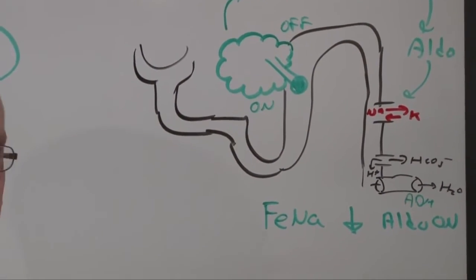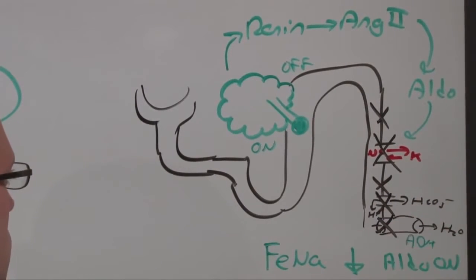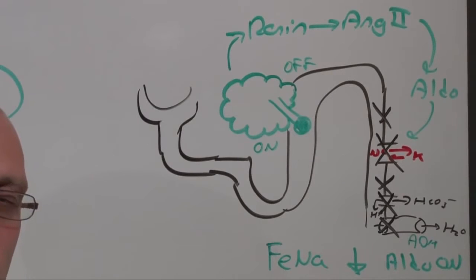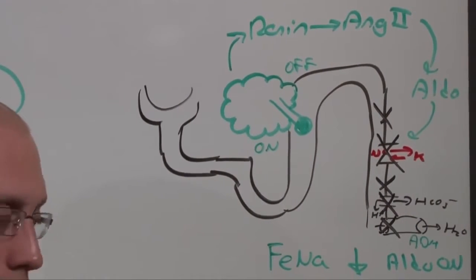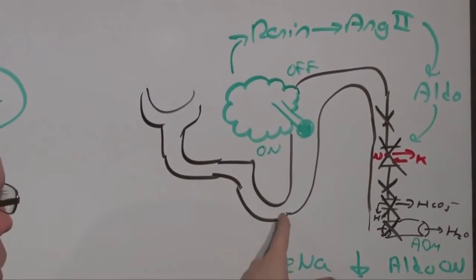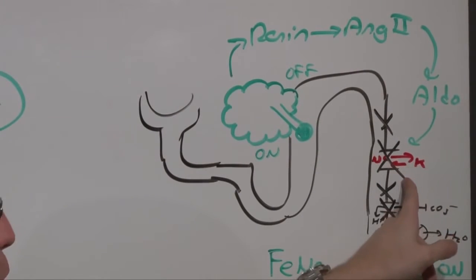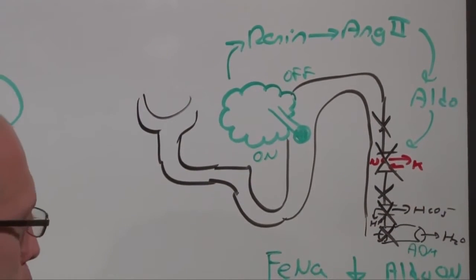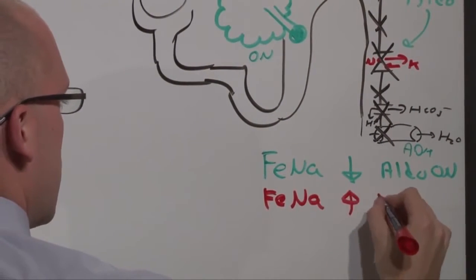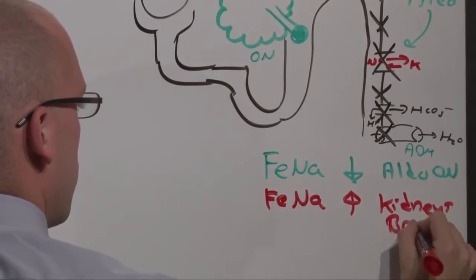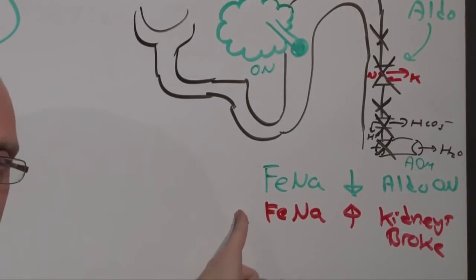If, instead, we take that same person and we just annihilate the collecting tubules, we lose all these channels, it doesn't matter if Aldo is on or not. If Aldo can't work on the tubules because the kidney itself intrinsically is damaged, then all the sodium that crosses the GFR is going to seem to be lost in the urine. If you don't have aldosterone, you can't reabsorb sodium. If the tubules are damaged, you can't reabsorb sodium. And so, if the FENA is elevated, it's because the kidneys are broken. People like this system. It's very clear. If the FENA is low, kidneys are working. If the FENA is high, kidneys aren't working. Prerenal, intrinsic renal.